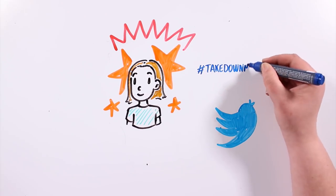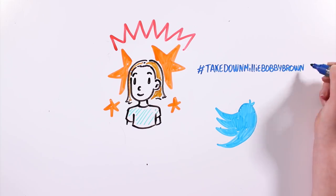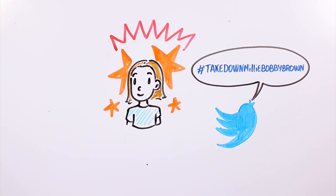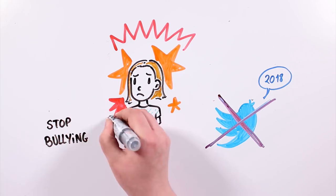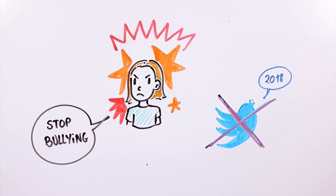Unfortunately, fame also has its downside. On Twitter, a meme of her became popular, putting together her image with homophobic commentaries. This meme's repercussion was such that Millie ended up deciding to deactivate her Twitter account in June 2018, publicly stating that there should be no room for bullying.